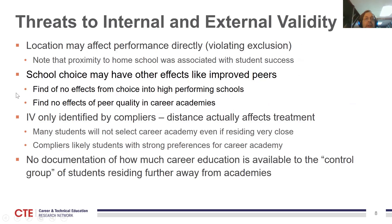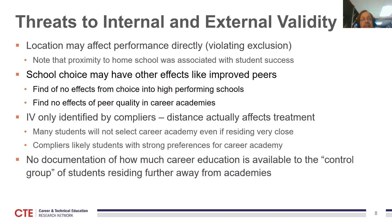There are a lot of issues here, both internal and external. Location may affect performance directly — this would violate the instrument, meaning it's not just distance driving outcomes through treatment but possibly directly affecting outcomes. So when we scale up by the treatment effects, we could be getting too large an effect. Maybe kids just do better when they're near the schools they tend to attend. School choice may also have other effects, like improving peers — though the study found no effects of choice at high-performing peer schools, and looked for peer effects within the career academy and didn't find any.